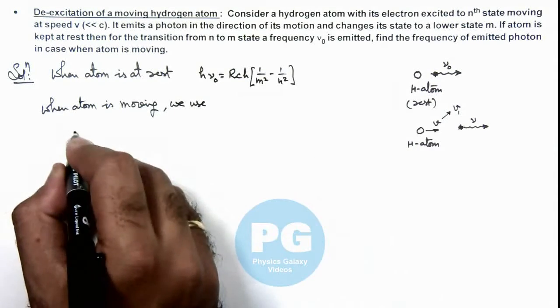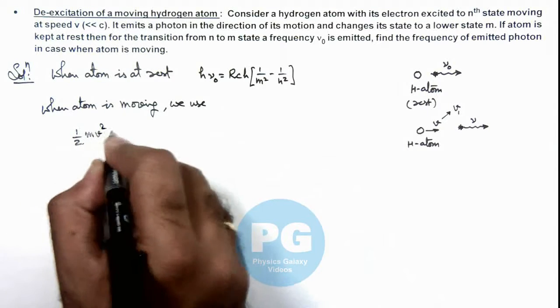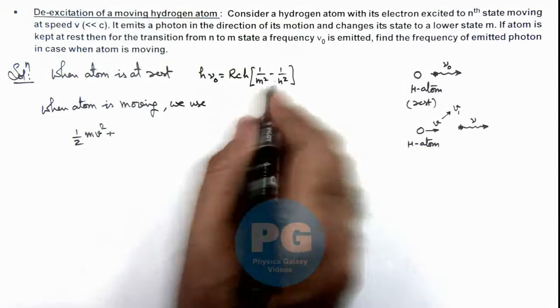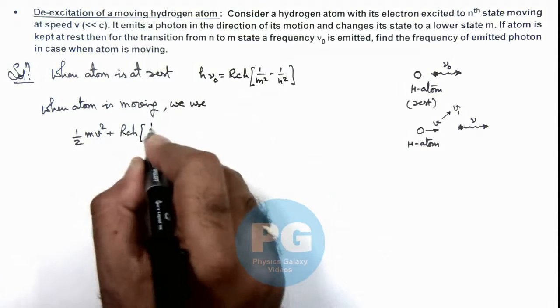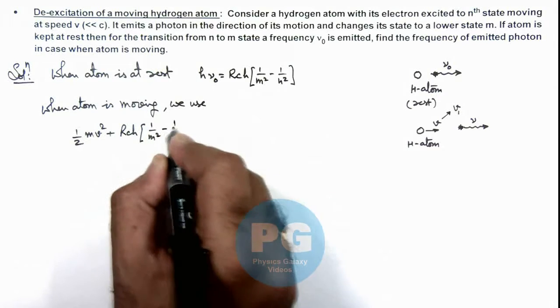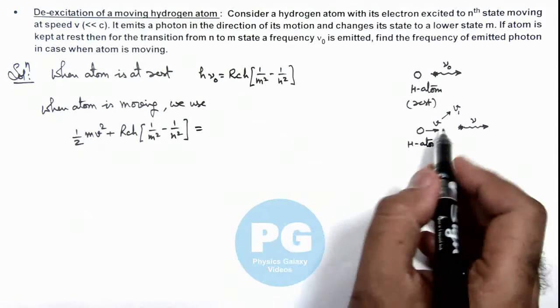Plus the released energy is Rch, Rch multiplied by 1 by m^2 minus 1 by n^2. This should be the total energy after emission of this photon.